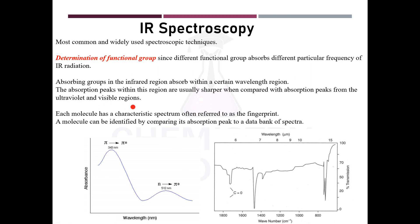Each molecule has a characteristic spectrum — two spectra will never match unless the molecule is the same. Every molecule has a unique spectrum, and therefore IR is also called the fingerprint of the molecule, just like we have a fingerprint which is unique. We can identify the molecule or the group by comparing its absorption peak to a data bank of spectra.